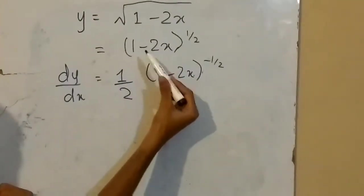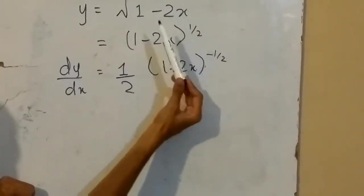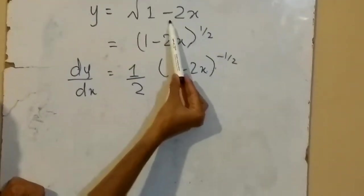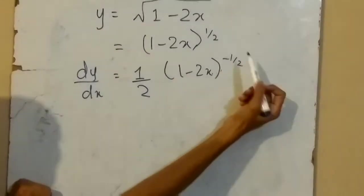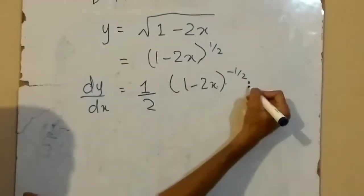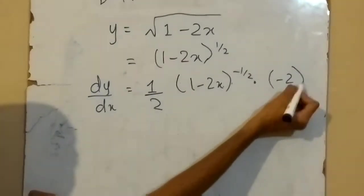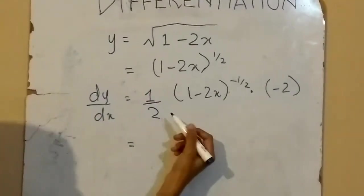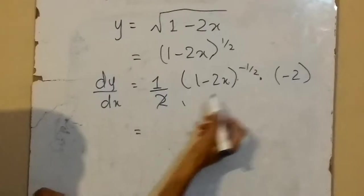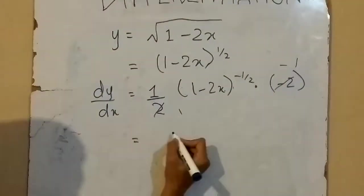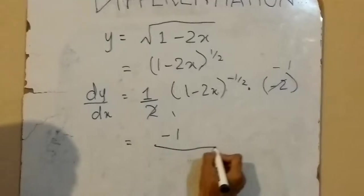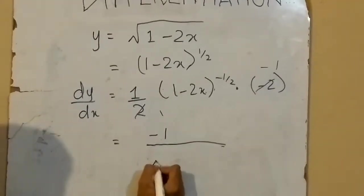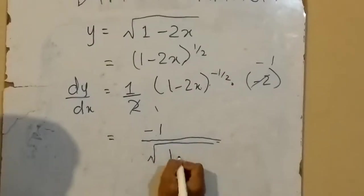We also differentiate inside the function. The derivative of 1 is 0, and the derivative of minus 2x is minus 2. So we multiply by minus 2. Simplifying: 2 times 1/2 gives 1, and the power becomes minus 1/2. So the full answer is minus 1 times (1 minus 2x) to the power of minus 1/2.